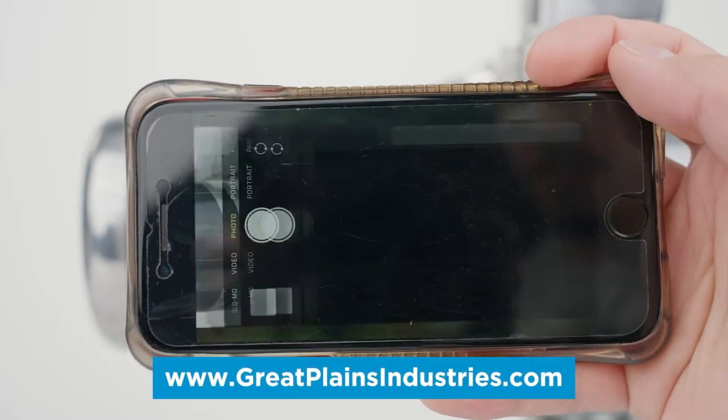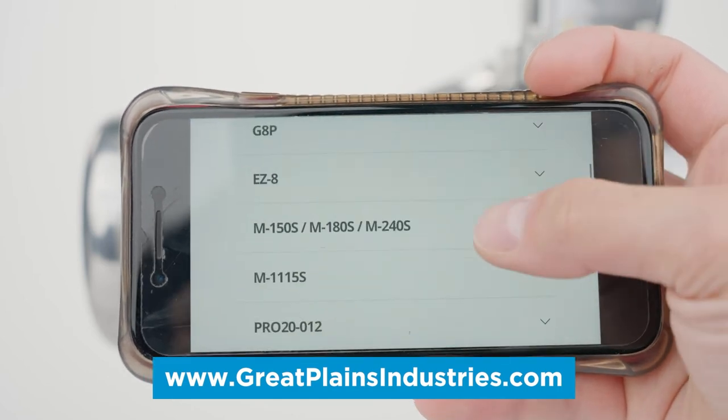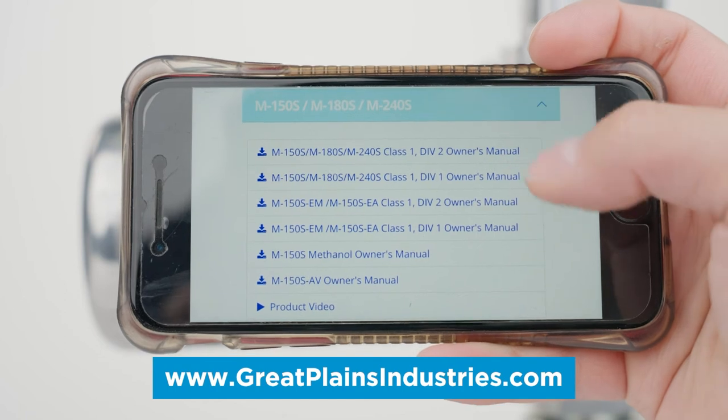If replacement parts are needed, they can be ordered through our website by scanning the QR code on the side of your pump with your smartphone.